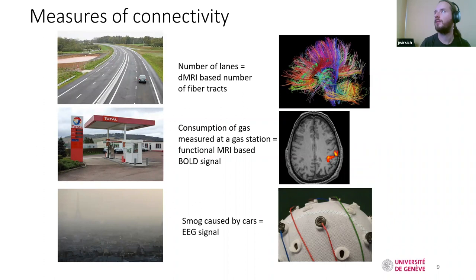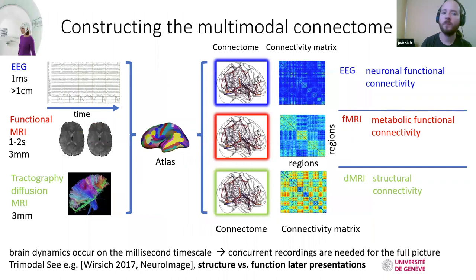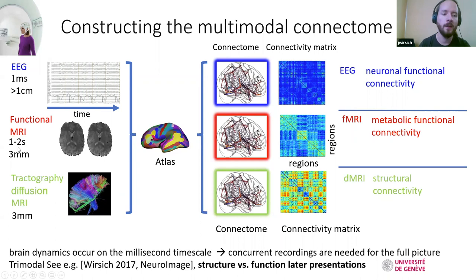You can see directly what the problems are with the different methods. When we want to measure the brain non-invasively in humans, we have really limited methods—we're not directly on the single neuron. For EEG, we have a very good temporal resolution of one millisecond, while for functional MRI, it takes one or two seconds to get a whole volume of the brain.